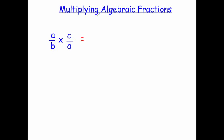In this video, we're going to look at how to multiply algebraic fractions. To multiply algebraic fractions, you simply multiply the numerators, multiply the denominators, and then cancel down. Or you can cancel down and then multiply, and I'll show you how to do both techniques for some of the examples.